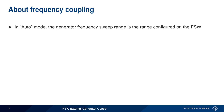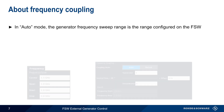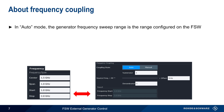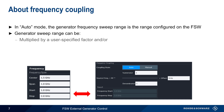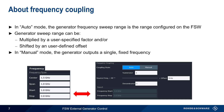In the default auto mode, the external generator sweeps over the same range as configured on the FSW — that is, the generator has the same start and stop frequencies as the FSW. This generator sweep range can however be modified in two ways: it can be multiplied by a user-specified factor, and/or shifted by a user-specified offset. There's also a manual mode, which simply sets the generator output to a single, fixed frequency.